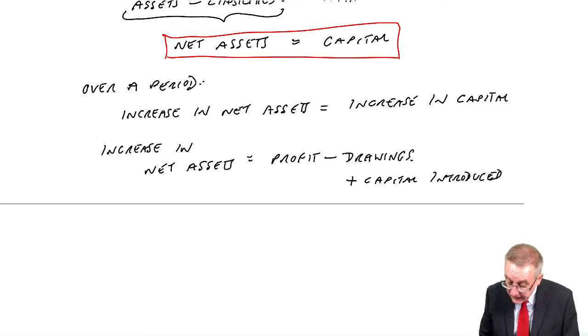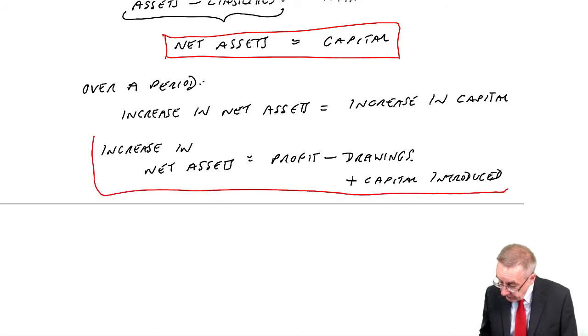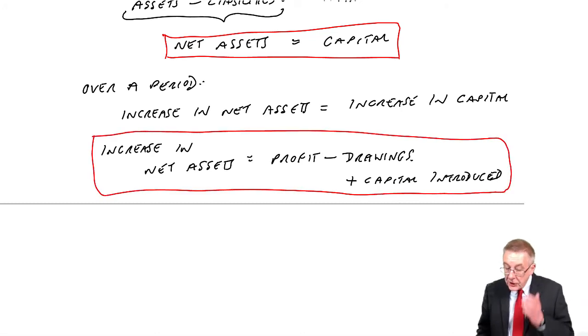Some people want to add on a fourth reason, a loss. No, a loss is simply a negative profit. So we don't need to add on another one. There are only three reasons why it changes over the year or month. It'll go up because the business has made a profit. It goes down because the owner's taken out money, drawings. It goes up because the owner's put more money in, capital introduced. And there is the second accounting equation. You must learn both of them, but especially that one. You're bound to be asked some questions checking you on that accounting equation.